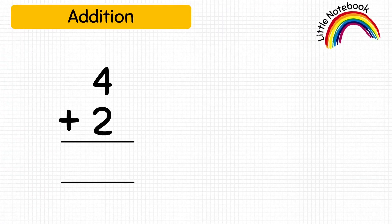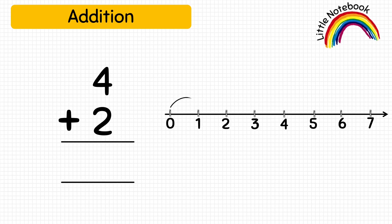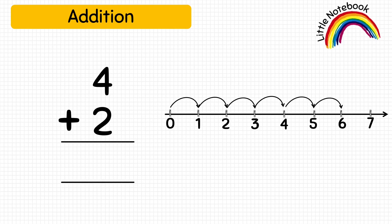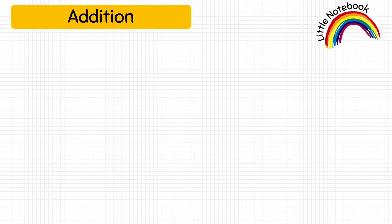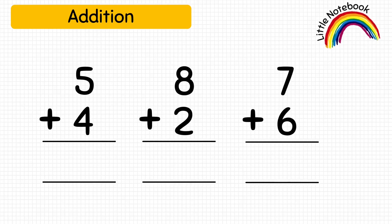There is one more method — you can add on a number line. This number line goes from zero to seven. The first number is four, so take four jumps on the number line. The second number is two, so take two more jumps. We have reached number six, which is our answer. So four plus two equals six. Here are a few more questions for your practice — do solve them and match your answers. Do watch our other worksheets as well.